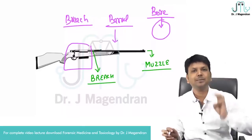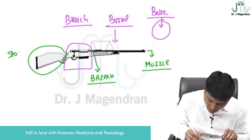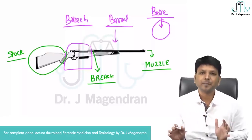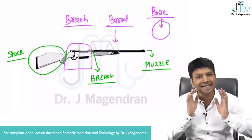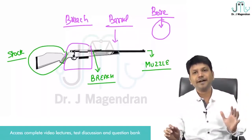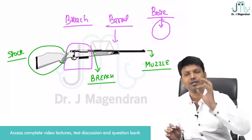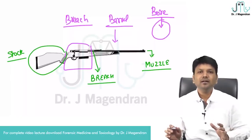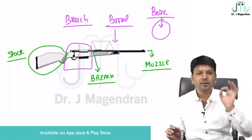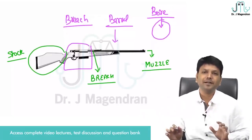So we have two important parts — let us go to the third part. The third part is the stock, also called support or handle. So basically every gun has three parts: breech, barrel, and stock. The breech is where everything happens; in front of the breech is the barrel. Whatever comes out of the breech travels through the barrel and comes out — that is how every gun works.